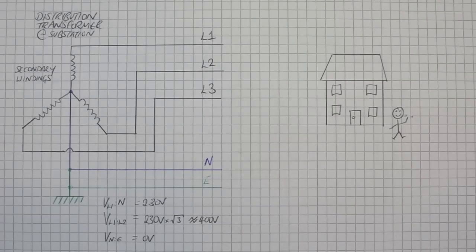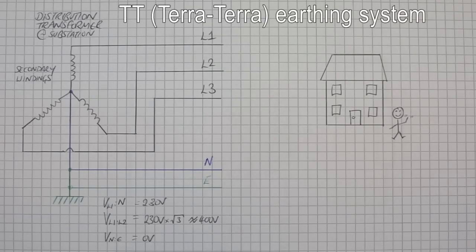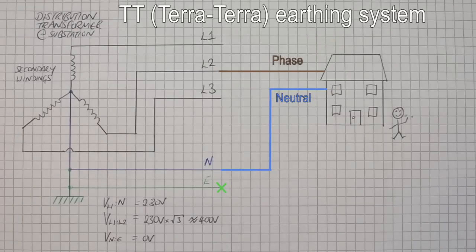The first configuration we'll talk about is the TT supply. In this configuration the household is provided with a phase conductor and a neutral conductor but no earth conductor. The household would normally obtain their earth conductor by driving an earth stake into the ground, and the mass of earth is used to provide the return path for the earth back to the system ground at the distribution transformer.